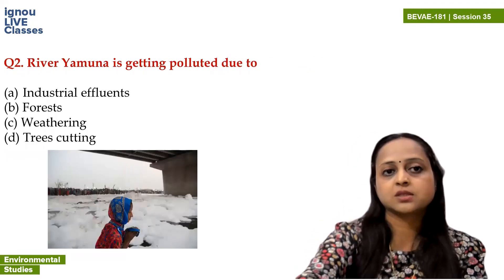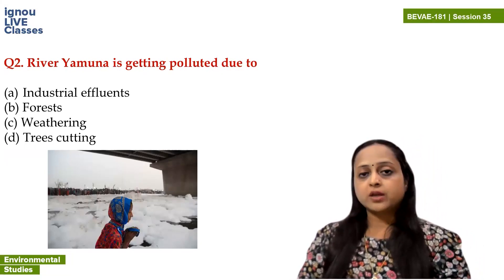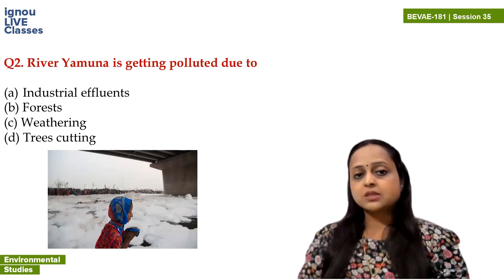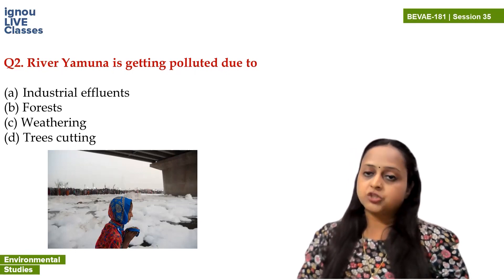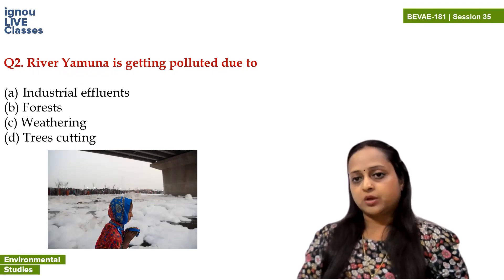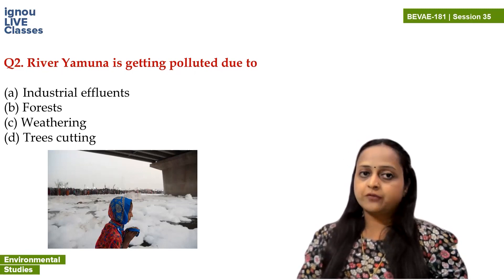The next question is: river Yamuna is getting polluted due to — ? You can see the picture on screen of river Yamuna. This picture is from some traditional Pooja and was going viral last year. You can see froth all over the Yamuna. So where is the froth from? The options are: industrial effluent, forest, weathering, and trees cutting.